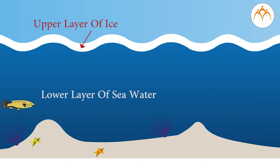When water is converted to ice, it expands and seals all the boundaries, forming an insulating layer. This further stops the temperature of lower layers from falling down. Water at lower levels still remains at 4 degrees Celsius and does not freeze, which helps aquatic life remain alive. That is how penguins eat fish by breaking the layer of ice.